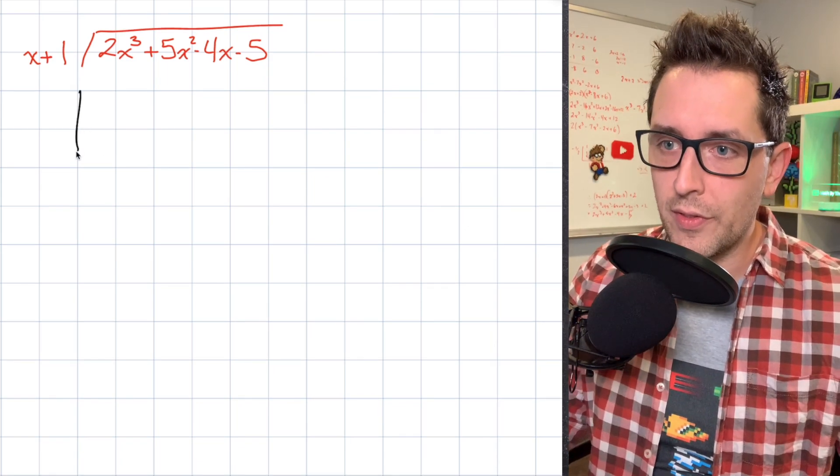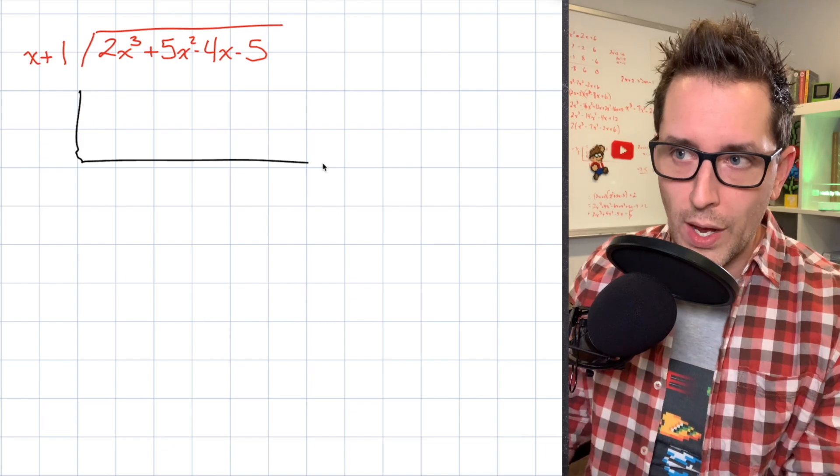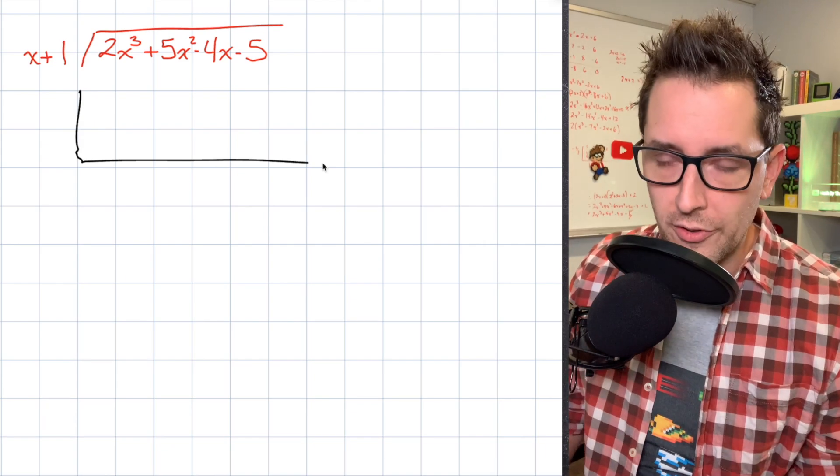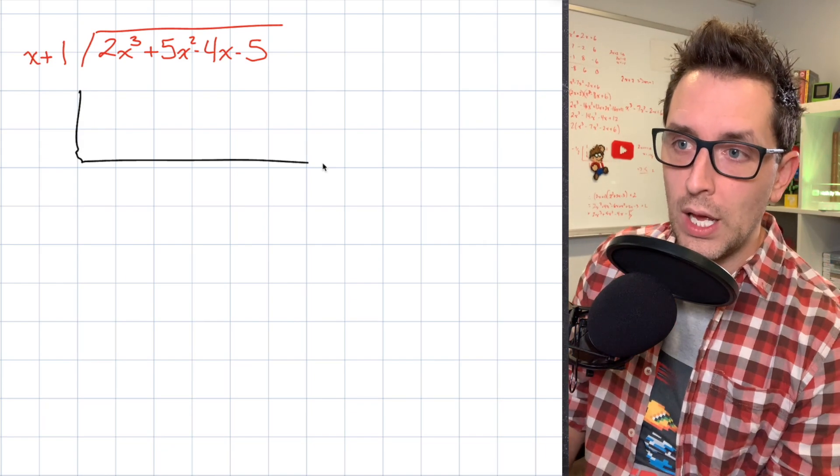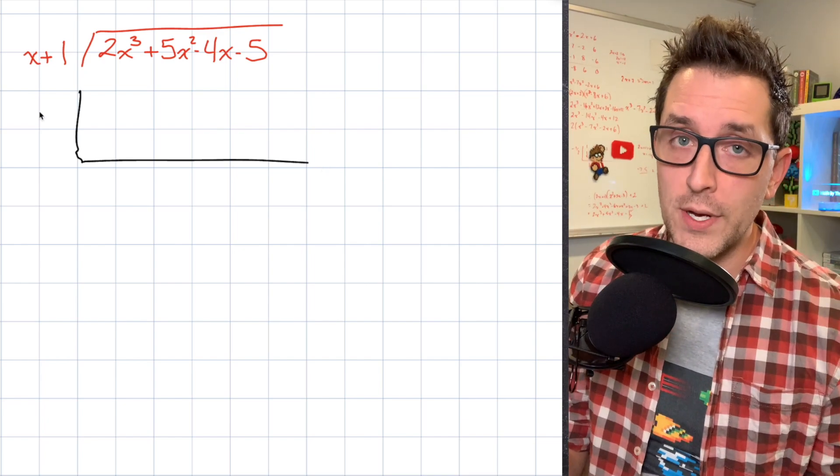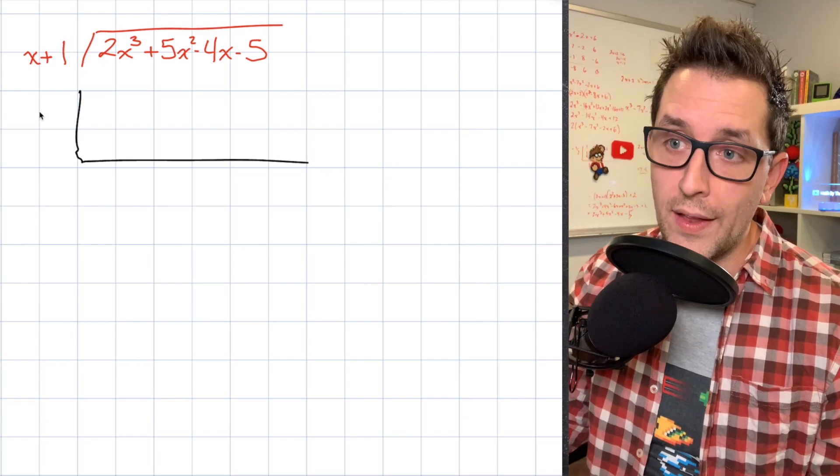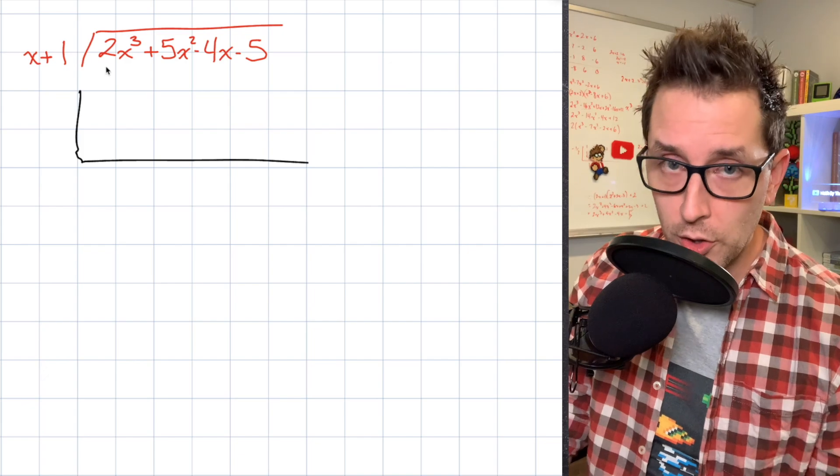Alright, so as you may know, the first step in any synthetic division problem is drawing one of these random L bracket chart things. And our goal here is to fill in this chart with some information. And so the first piece of information we need is going to come from our dividend, and that's going to be the coefficients of the polynomial that we're dividing.